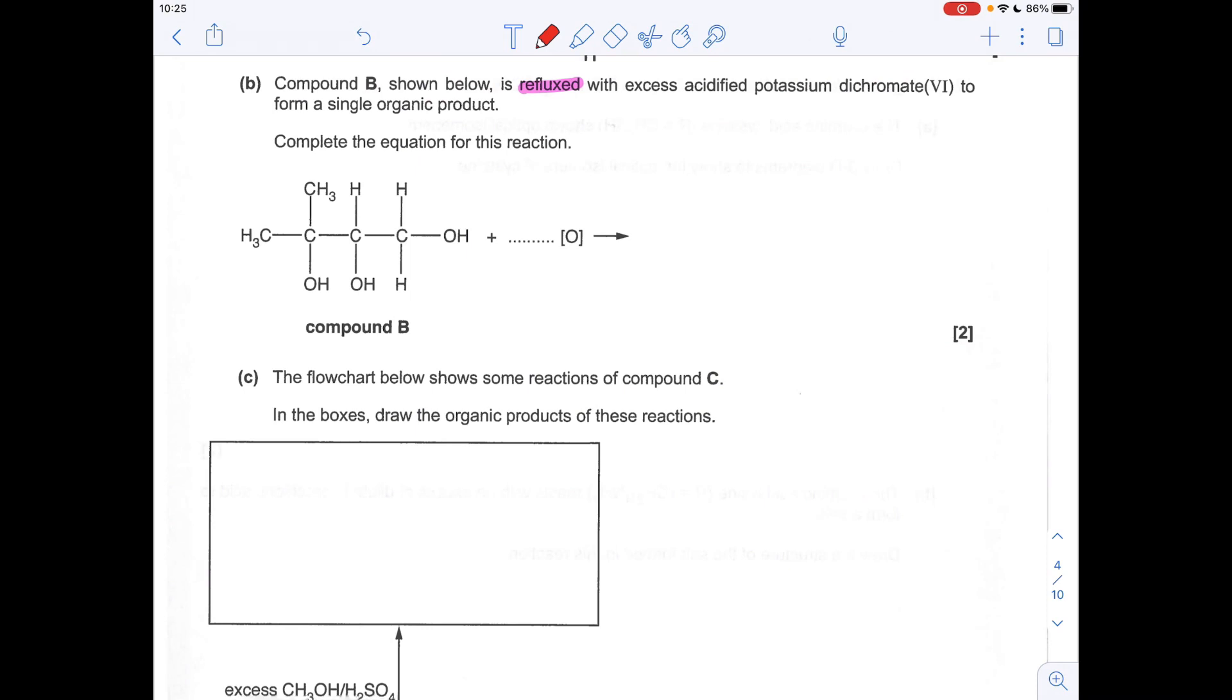Next question. So compound B is refluxed with excess acidified potassium dichromate VI to form a single organic product. So it's obviously been oxidized. So we need to establish what kind of alcohol groups we've got in compound B and that'll help us work out how many times it can be oxidized and what the final functional groups would look like.